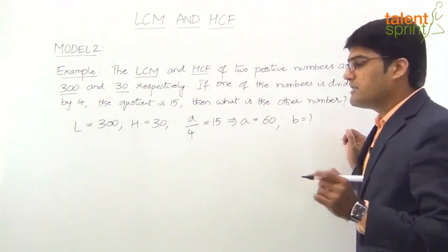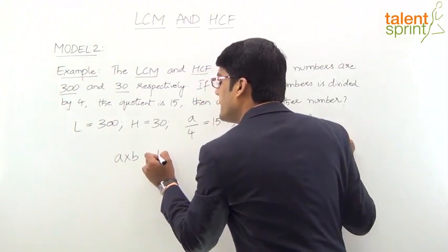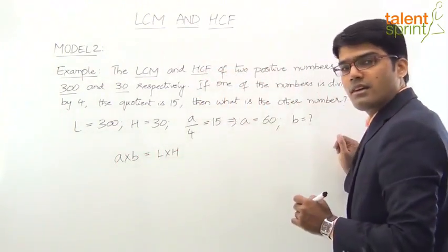B is equal to what? Now, as we discussed, the product of any two positive numbers A times B will be equal to the product of their LCM and HCF: A×B = L×H.